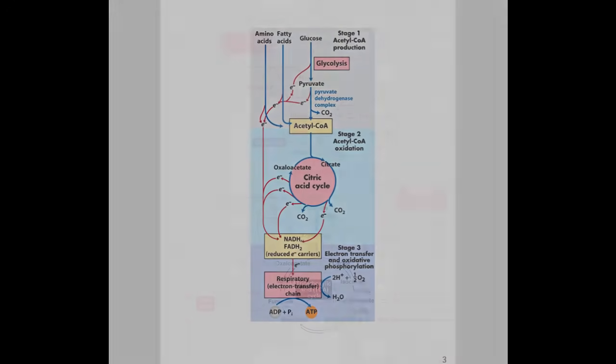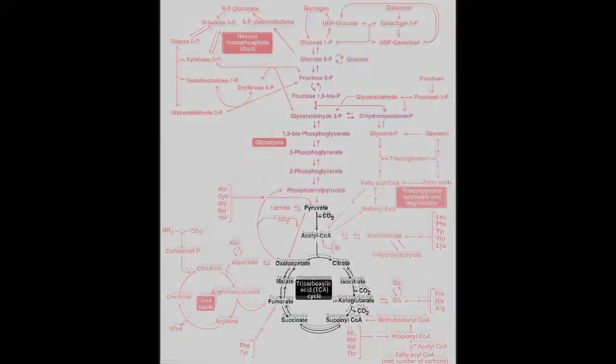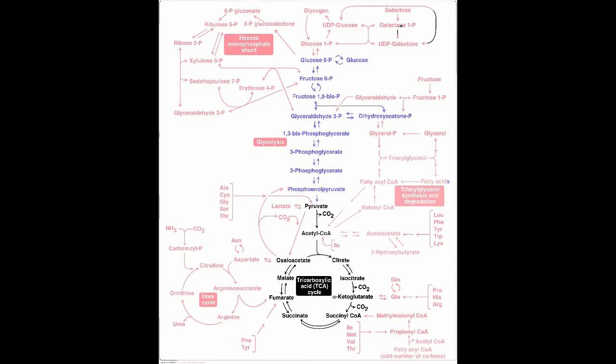In the big picture of metabolism, the TCA cycle receives inputs from multiple sources. Carbohydrates enter through glycolysis. Fatty acids are broken down in the mitochondria and enter as acetyl-CoA — Dr. Roucenal will talk about that process later. Amino acids can be catabolized to various molecules which enter the cycle at different points — Dr. Johnson will talk about that later.